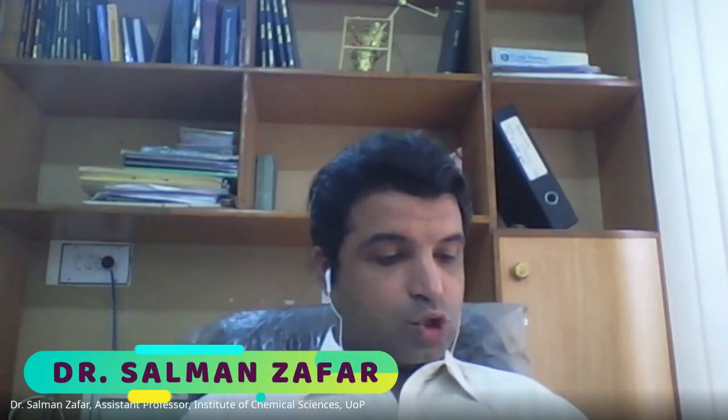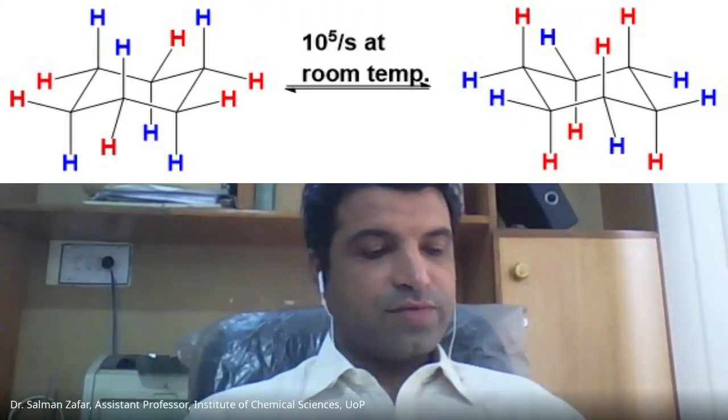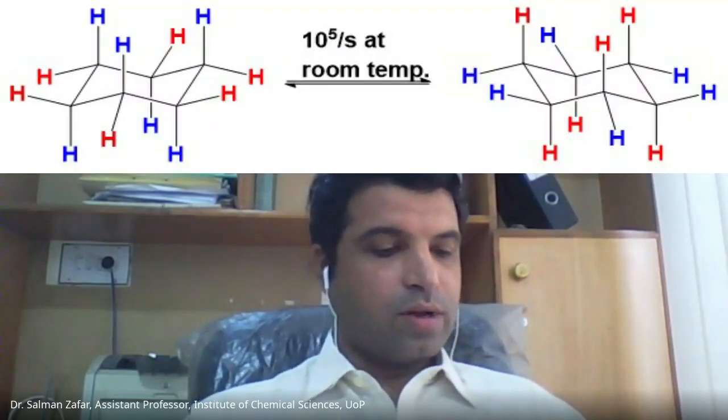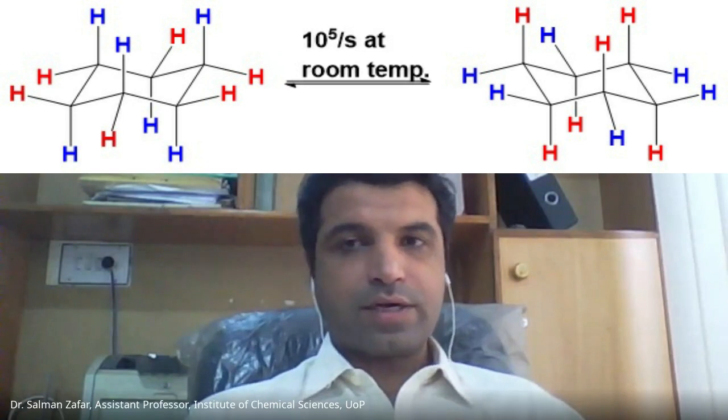Cyclohexane gives two signals in proton NMR at low temperature. Ring flipping in cyclohexane is a very fast process even at room temperature, and NMR is a slow process compared to that, so it cannot differentiate between the axial and equatorial hydrogens. When one chair form flips into another, the axial hydrogens become equatorial and the equatorial become axial.